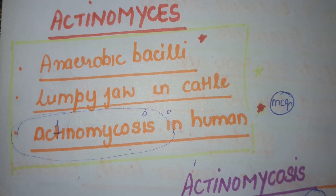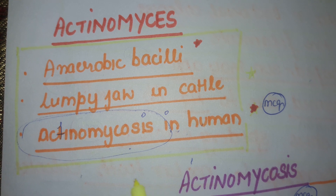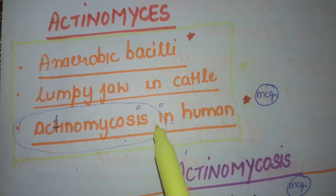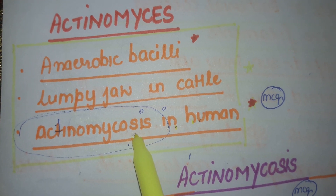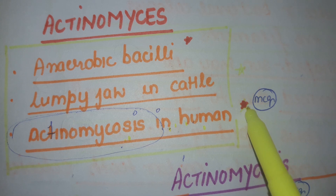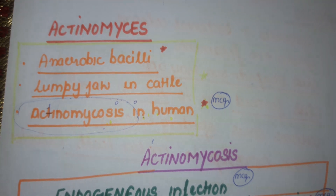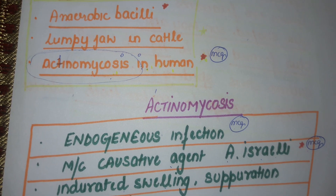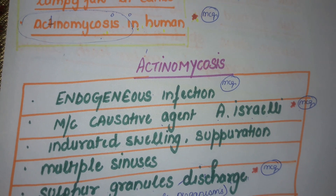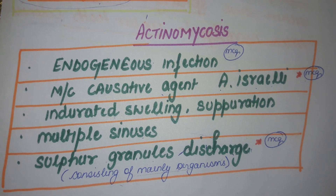So Ectanomyces — these are basically anaerobic bacilli causing lumpy jaw in cattle and Ectanomycoses in humans. Very, very important. Ectanomycoses that is caused in humans — noted down, important from MCQ point of view. Now Ectanomyces leads to Ectanomycoses in humans, and it's an endogenous infection.